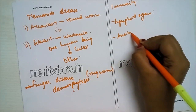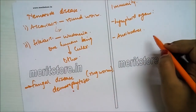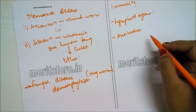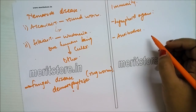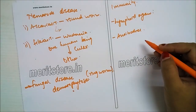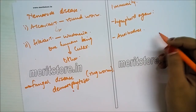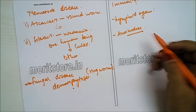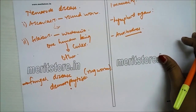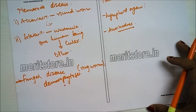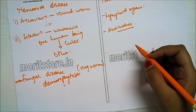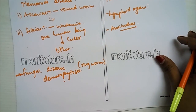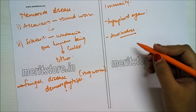Antibodies are immunoglobulins produced in response to antigenic stimulation. Antigens are substances which, when introduced into the body, stimulate the production of antibodies. Most antigens are proteins, but some are carbohydrates, lipids or nucleic acids. Immunoglobulins are glycoproteins made up of four polypeptide chains — two heavy and two light. Light and heavy chains are subdivided into variable and constant regions. There are mainly five types of immunoglobulins.